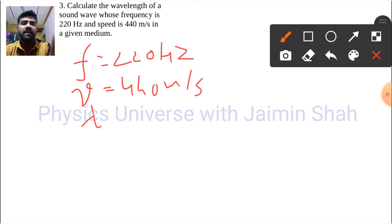Now here we need to find lambda, so the equation to find that lambda that we have lambda into f. Now lambda that we have to subject, so lambda is equal to v upon f.